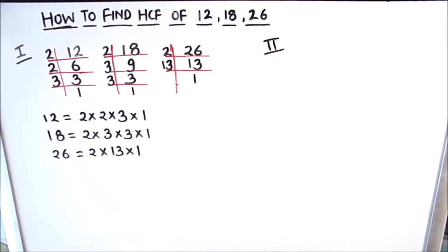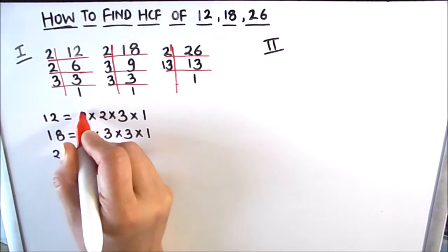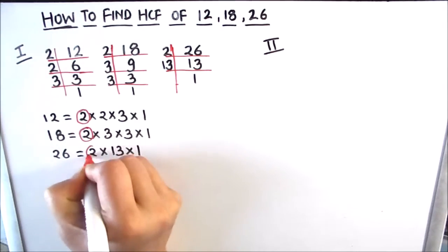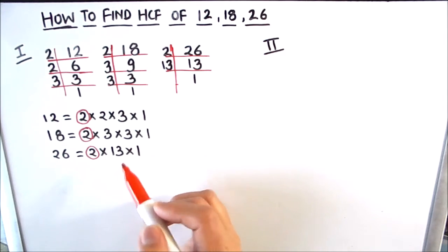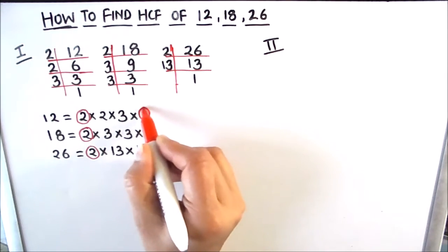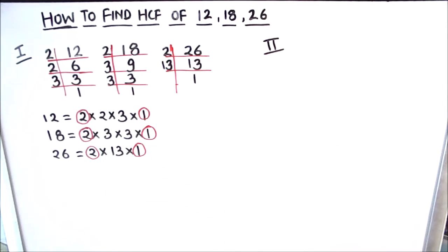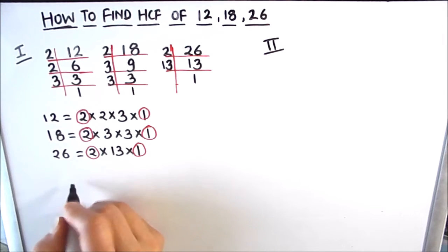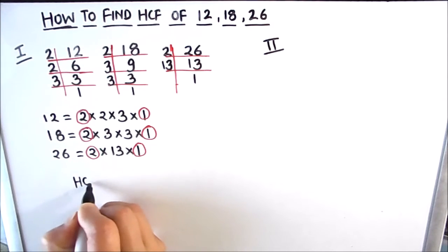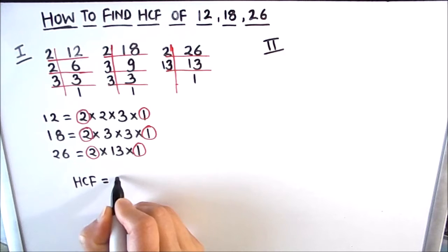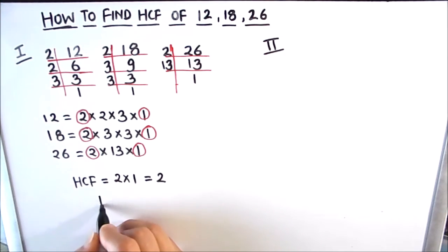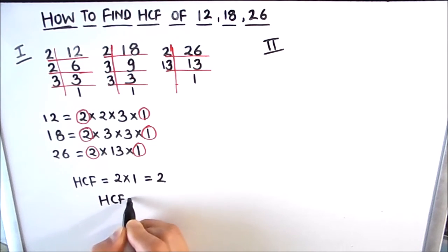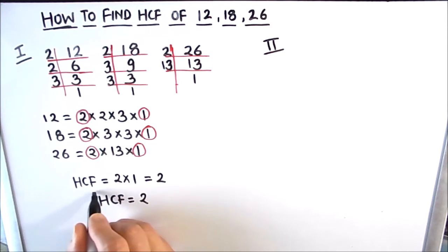Now for finding the HCF, we are going to find the product of the common factors among the three numbers. We see that 2 is common to all three numbers. Next, 3 is common to 12 and 18 but not to all three numbers. The number 1 is common to all. So we take the product of the common factors: 2 times 1 equals 2. The HCF of the three numbers is 2.